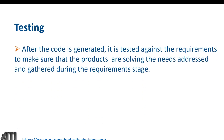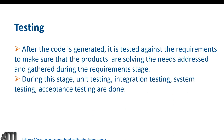After the code is generated, it is tested against the requirements to make sure the product is solving the needs gathered during the requirements stage. In this phase we create a test plan and test cases, and execute them based on customer requirements. Unit testing, integration testing, system testing, and acceptance testing are done here. Unit testing is performed by white-box testers or developers; integration testing covers the integration of different modules.